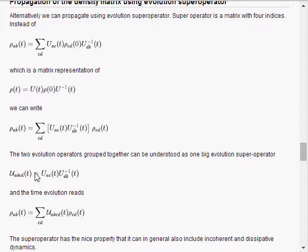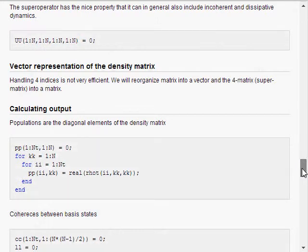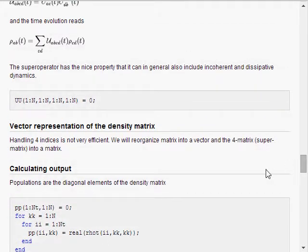So in fact, I can specify something called super operator, a bigger operator, which has four indices, which groups together these two evolution operators, and write the evolution this way. This looks like basically really achieving nothing, but that achievement will be really big when we look into the open quantum systems.